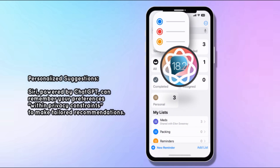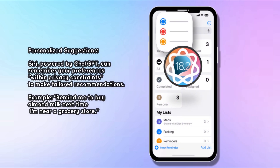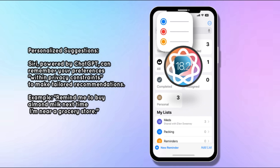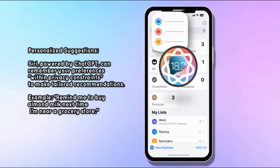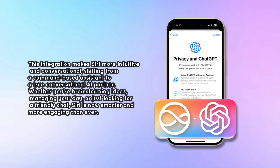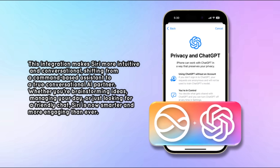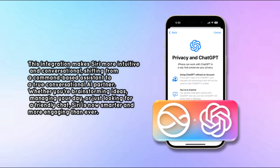Siri, powered by ChatGPT, can remember your preferences within privacy constraints to make tailored recommendations — for example, 'Remind me to buy almond milk next time I'm near a grocery store.' This integration makes Siri more intuitive and conversational, shifting from a command-based assistant to a true conversational AI partner, whether you're brainstorming ideas, managing your day, or just looking for a friendly chat.